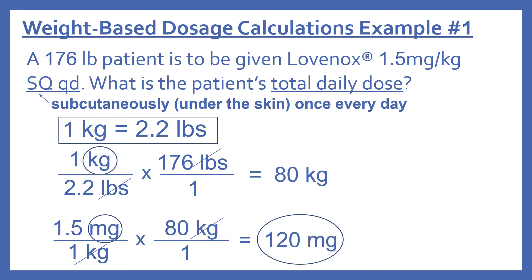Converting weight: 1 kg per 2.2 lbs × 176 lbs = 176 ÷ 2.2 = 80 kilograms. Then applying the dose: 1.5 mg/kg × 80 kg — kilograms cancel — gives 120 milligrams. So the total daily dose is 120 mg, since it is administered once a day.